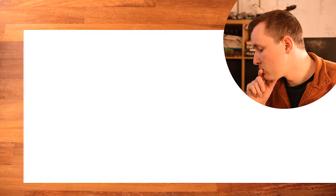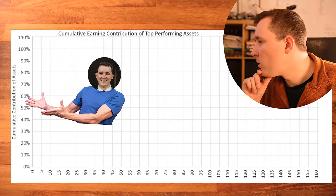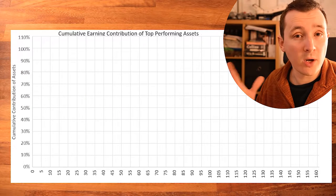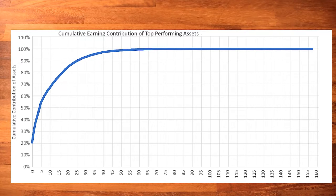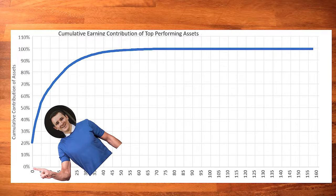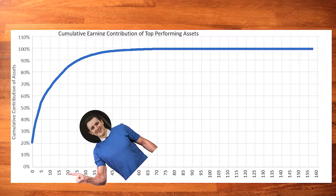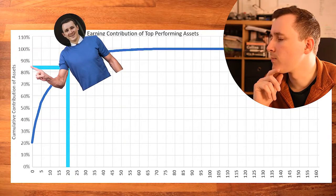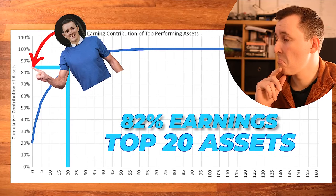The second graph to show portfolio performance keeps the same x-axis but changes the y-axis to cumulative contribution of assets towards lifetime earnings. For example, considering the point at asset 20 means adding the earning contributions of assets 1, 2, 3, 4, and so on up to asset 20. Moving up to the curve and reading across horizontally tells us how much of my total earnings those 20 assets contributed, which turns out to be 82%.